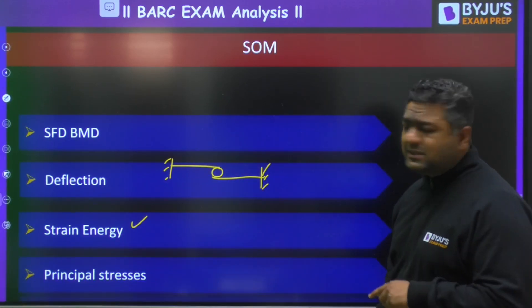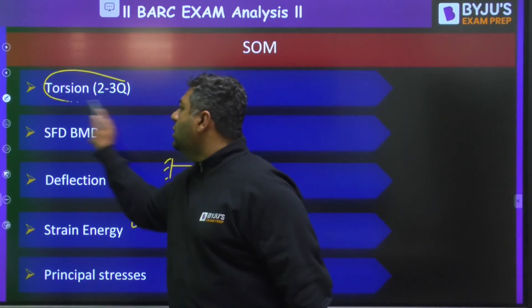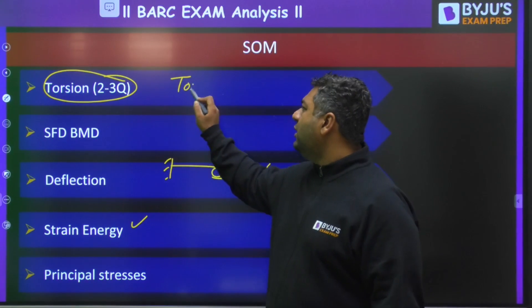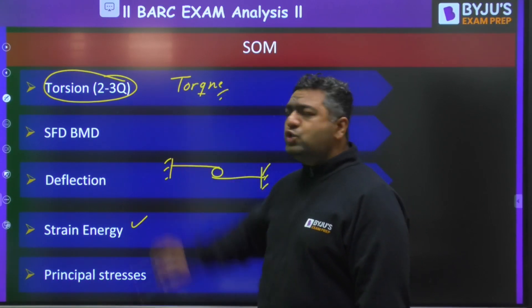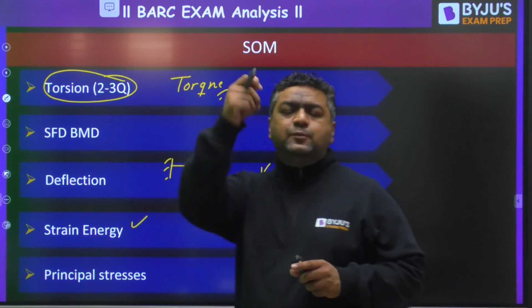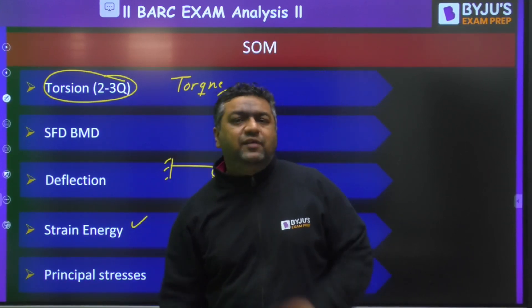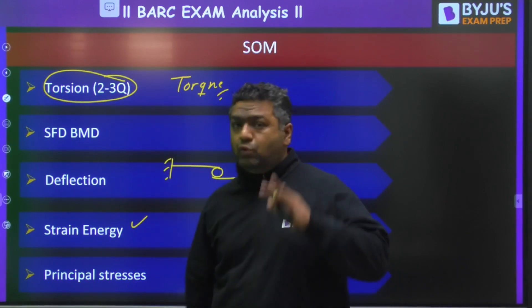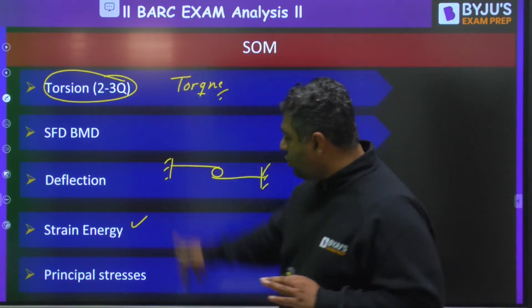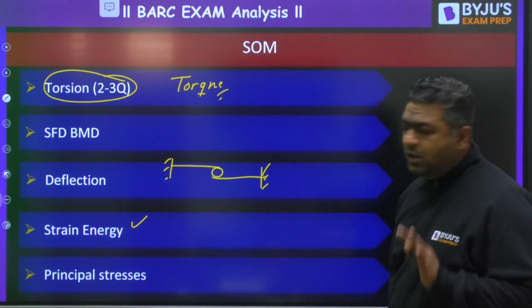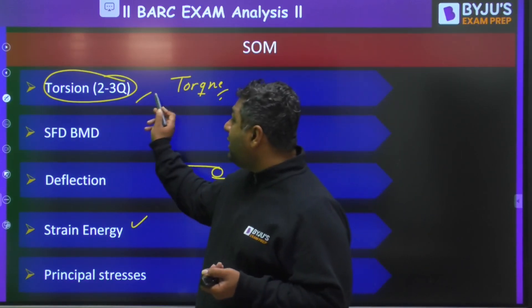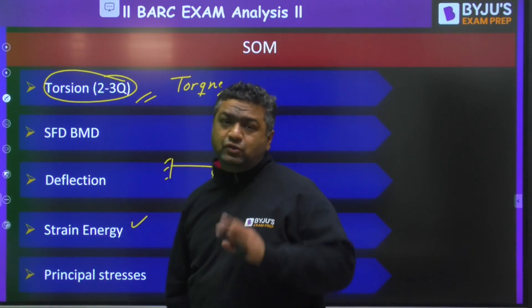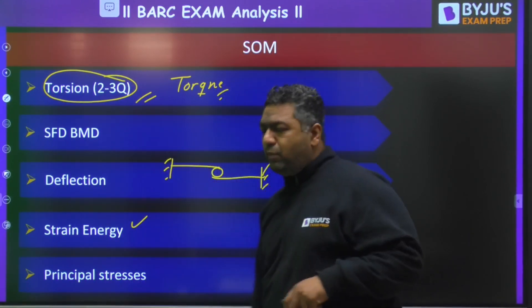Then principal stresses were covered. More questions were from torsion — one where you needed to calculate torque given power and N, and another where a shaft with a pulley and forces on both ends was given. So from torsion, more questions were there. Overall from Strength of Materials, covering SFD-BMD, deflection, strain energy, principal stresses, and torsion — more than 8 to 9 questions were there.